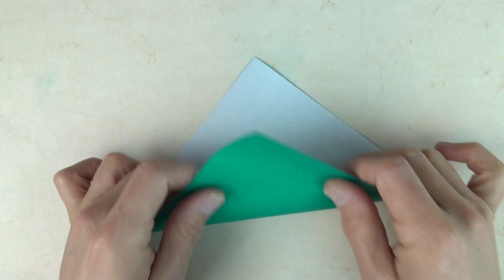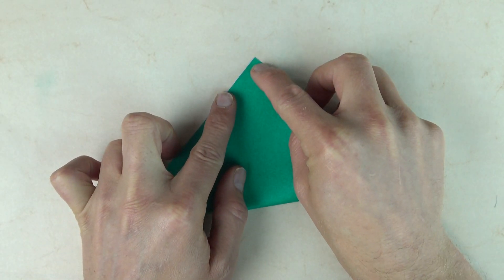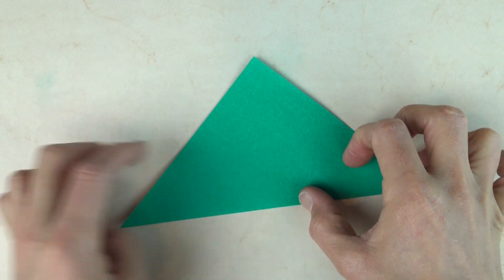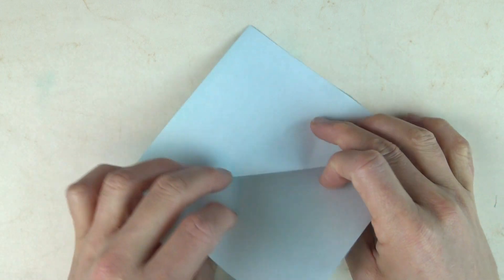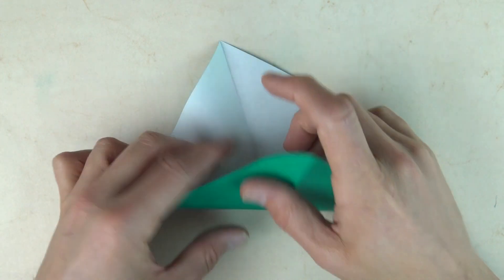White side up. And fold diagonally in half. Unfold. Rotate. And fold in half in this direction.